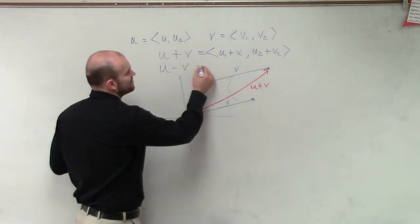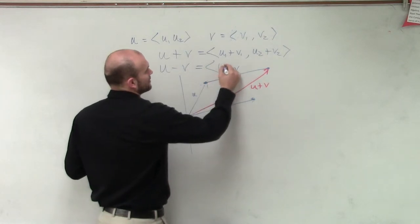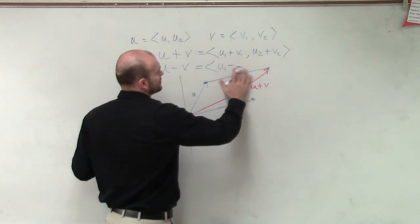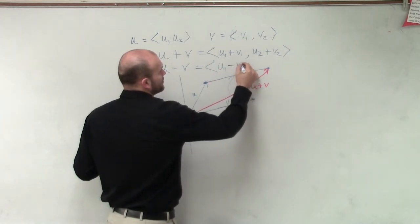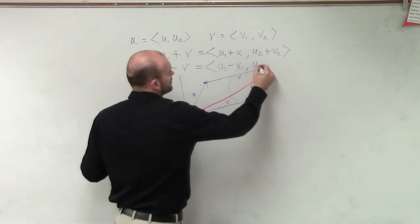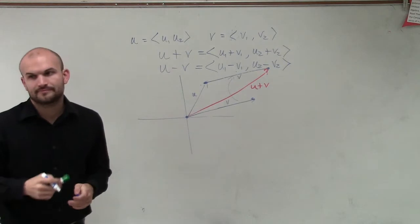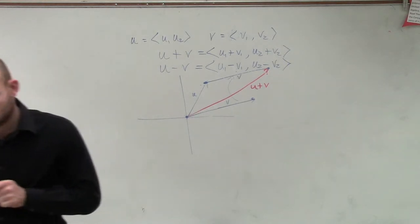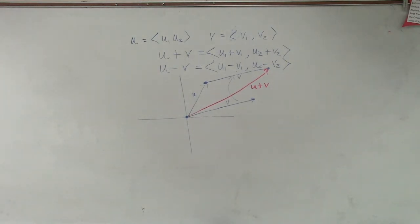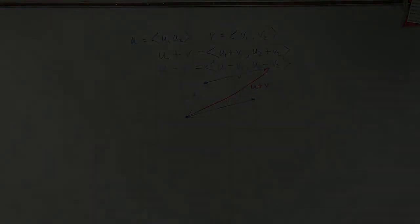But u minus v is going to be the same thing: u sub 1 minus v1, comma, u sub 2 minus v sub 2. So that's vector addition and subtraction.